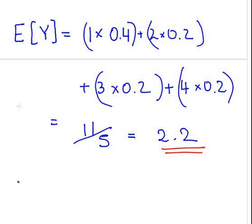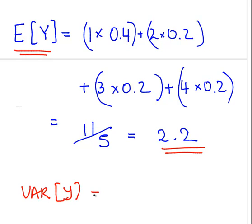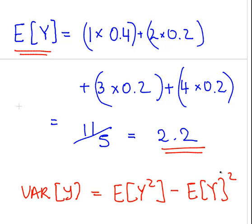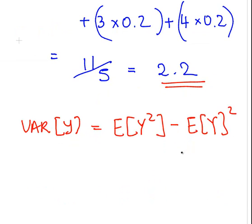The variance of y I'll leave for now, but essentially: Var(Y) = E(Y²) minus [E(Y)]². You calculate E(Y²) the same way as we did for x, then subtract 2.2 squared. I'll move on to the next question.